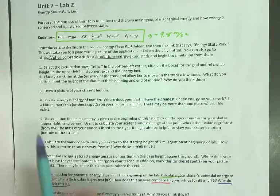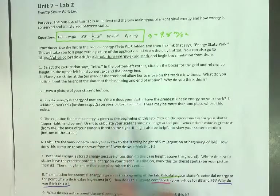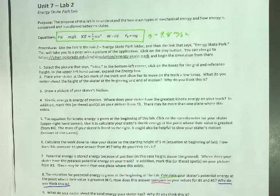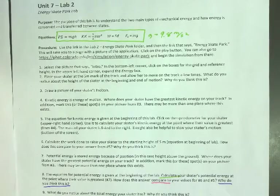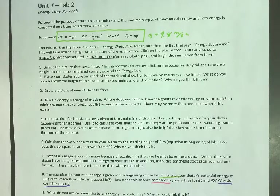For number four, it says kinetic energy is the energy of motion. Where does your skater have the greatest kinetic energy on your track? In addition, mark this on your picture. We'll talk about that. And there may be more than one place, but it doesn't necessarily have to be. Let's see. Joshua, let's start with you. So where did your skater have the highest kinetic energy as they're going up and down their track?